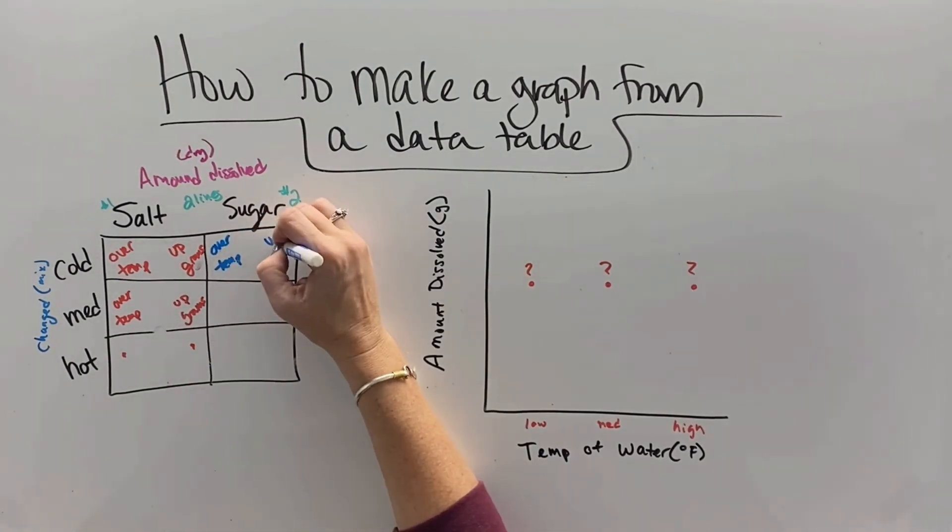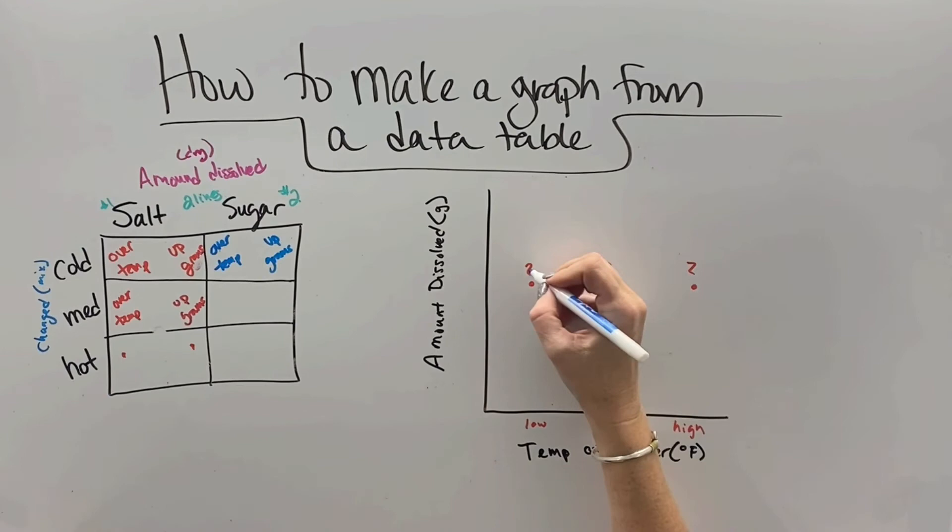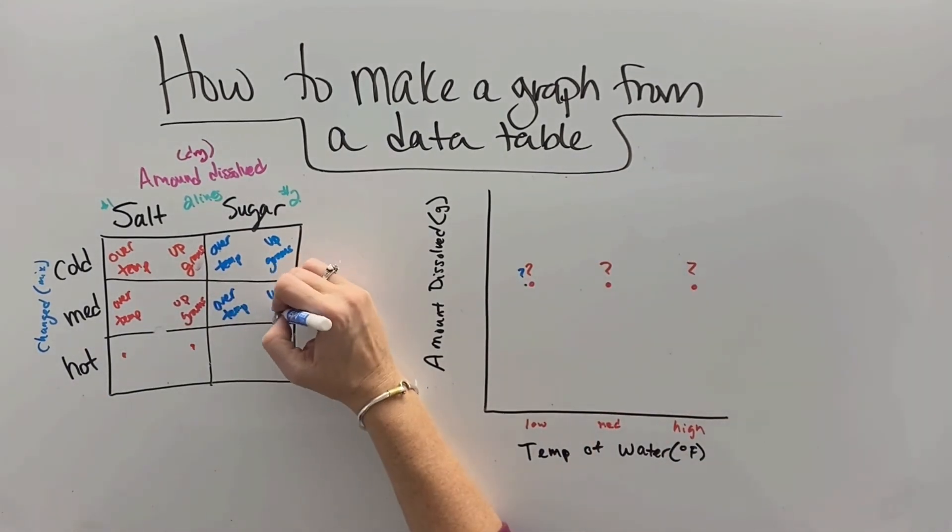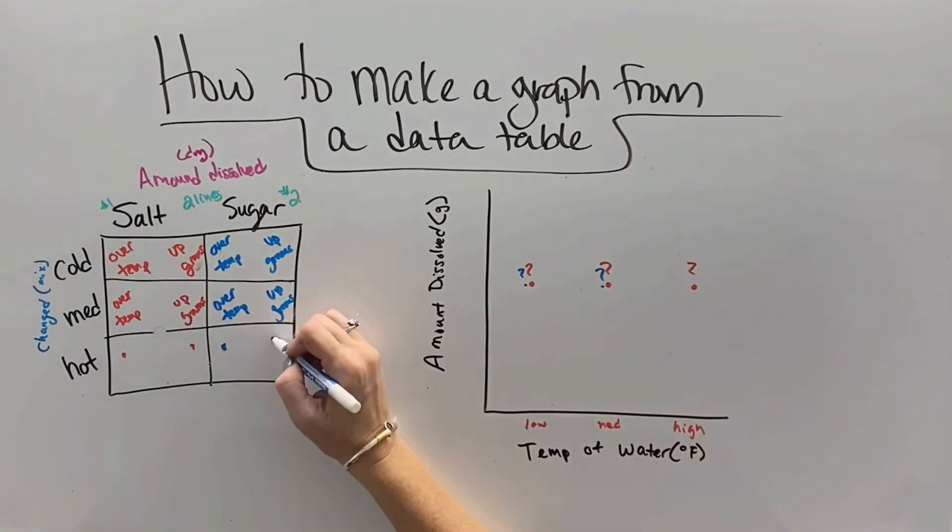The same thing will go for sugar. Over by the temperature, up by amount dissolved, draw a dot. Over temp, up amount dissolved, draw a dot. Over temp, up amount dissolved, draw a dot.